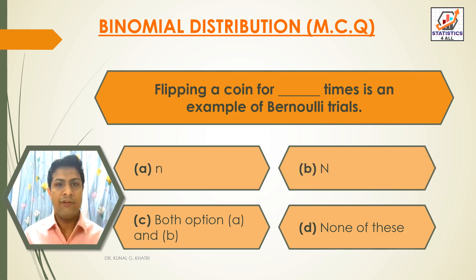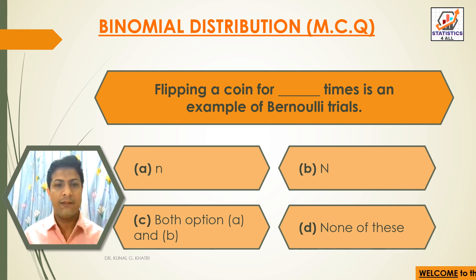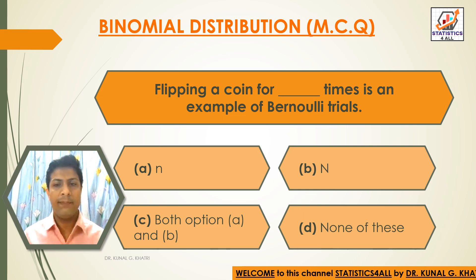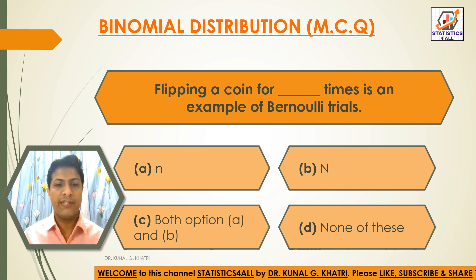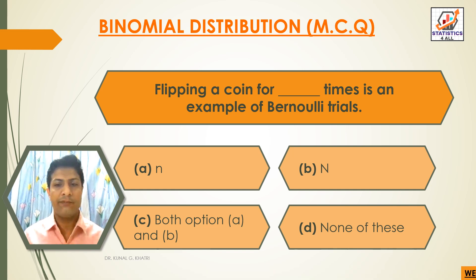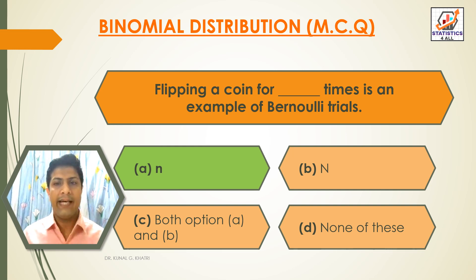Next question: Flipping a coin for dash times is an example of Bernoulli trials. Option A: small letter n. Option B: capital N. Option C: Both A and B. Option D: None of these. The answer is option A — small letter n. Flipping a coin for n times is an example of Bernoulli trials.